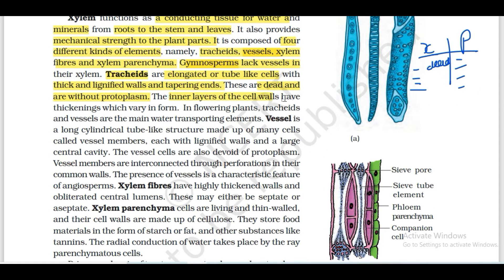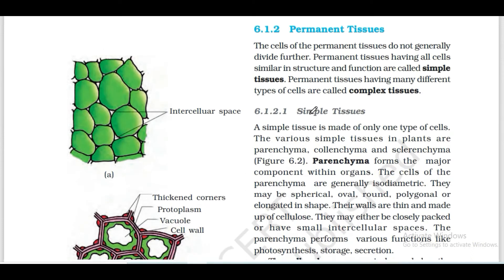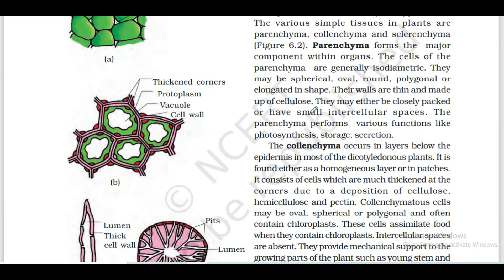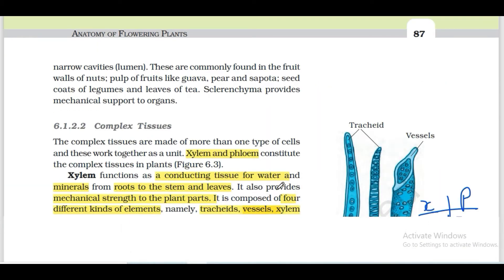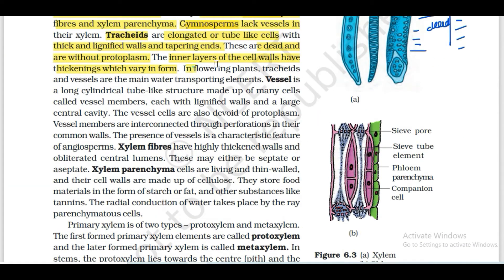The inner layer of the cell wall has thickening which varies in form. In the inner layer there is thickening. In flowering plants, the tracheids and vessels are the main water-transporting elements.